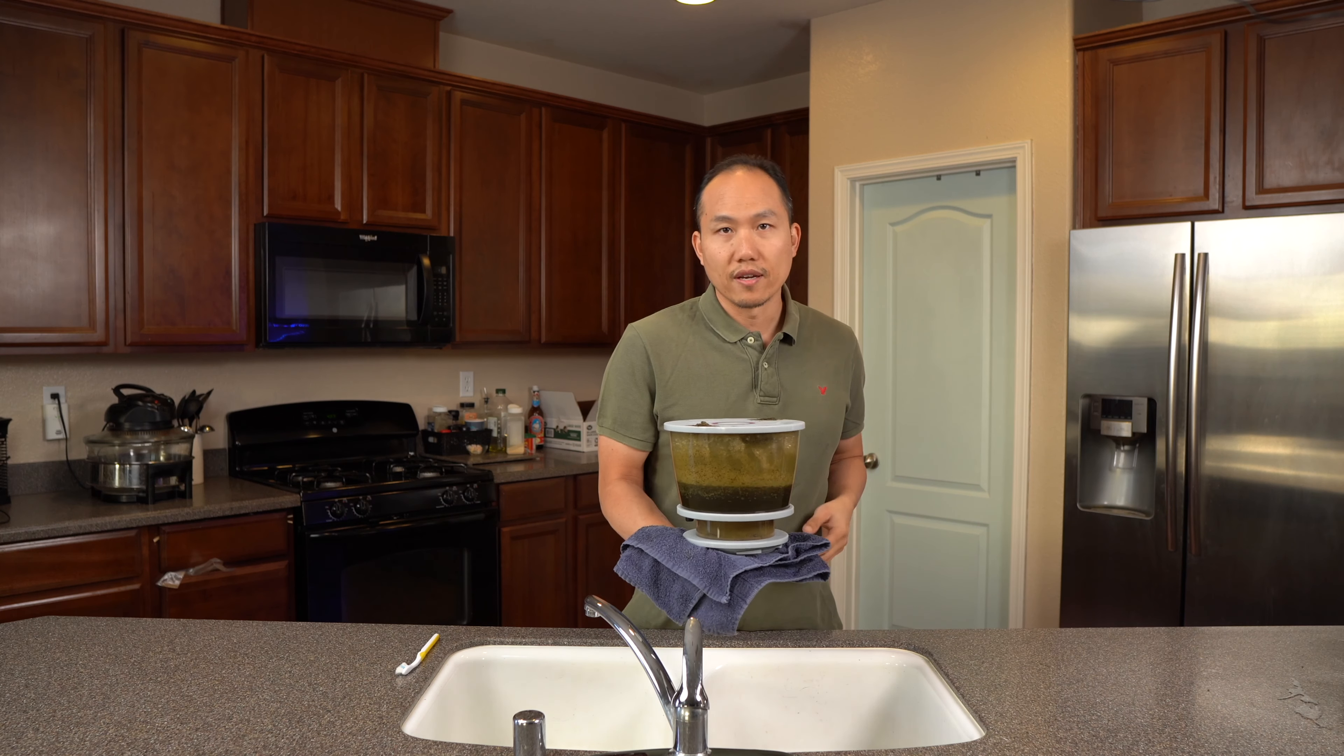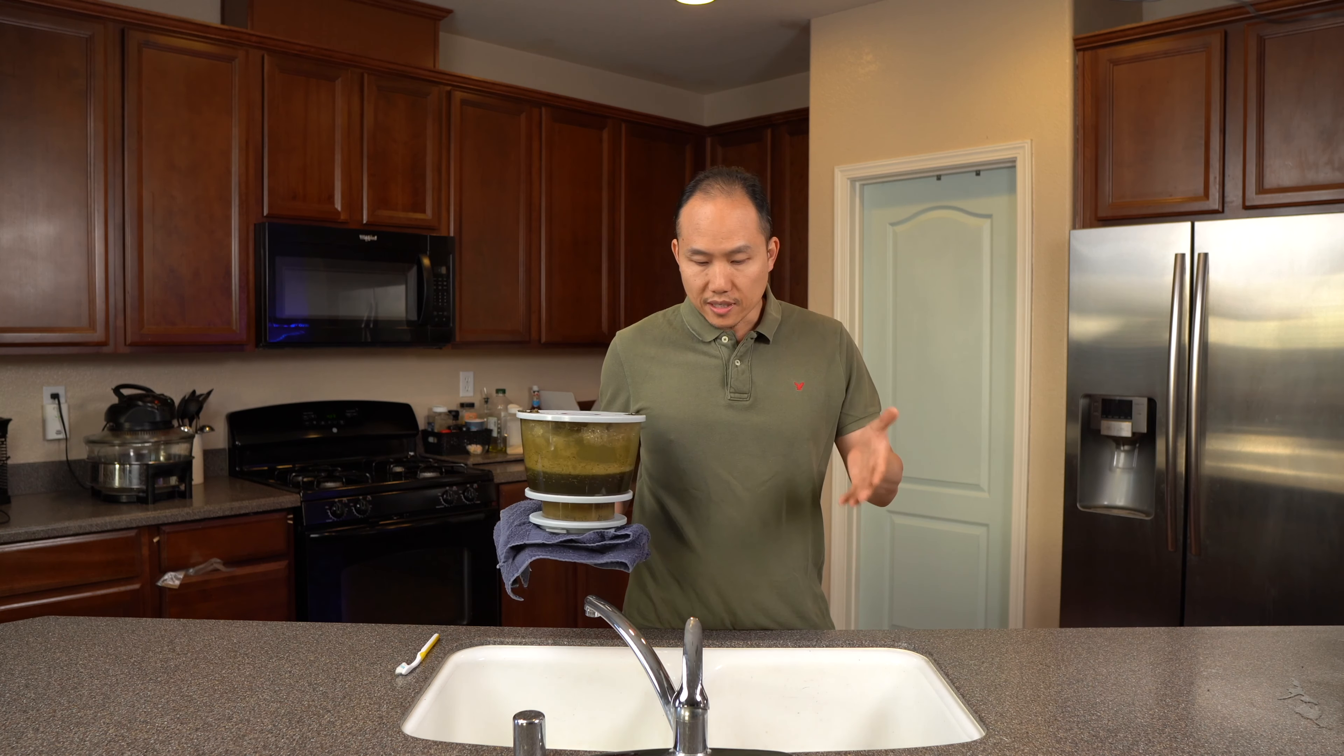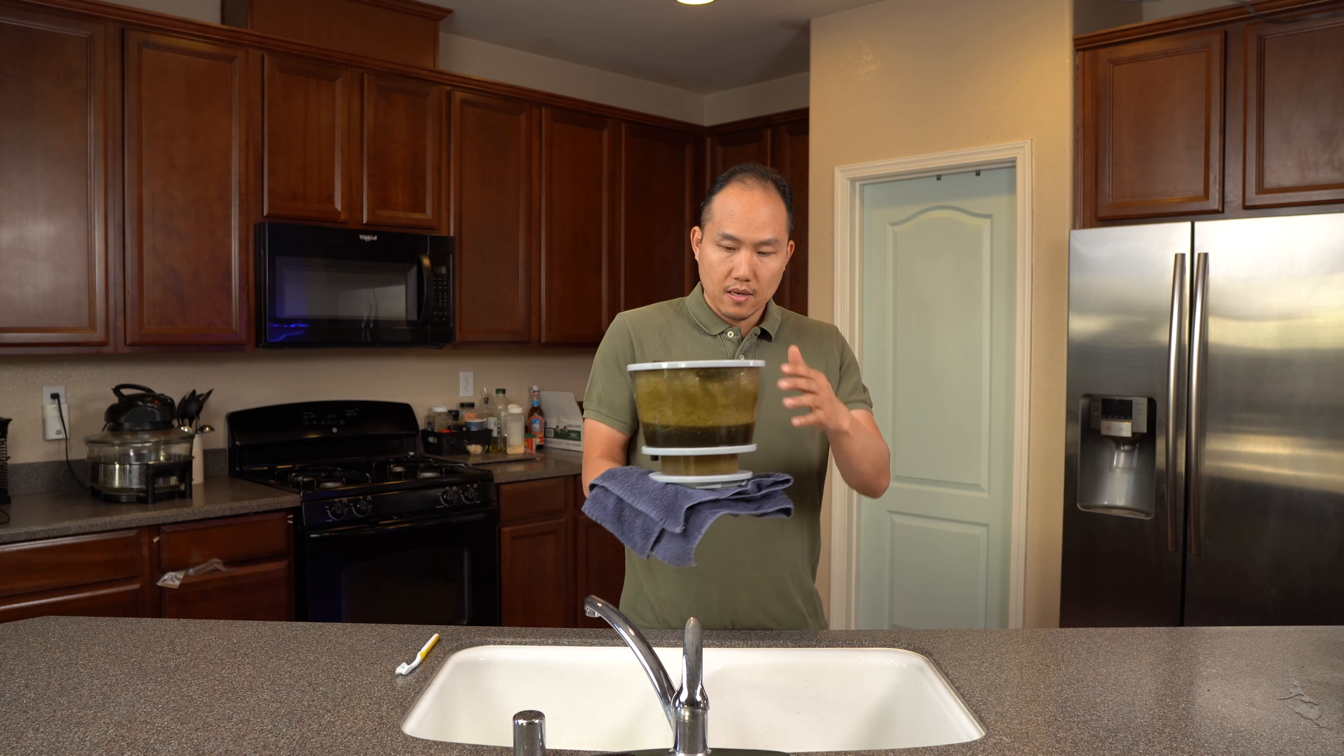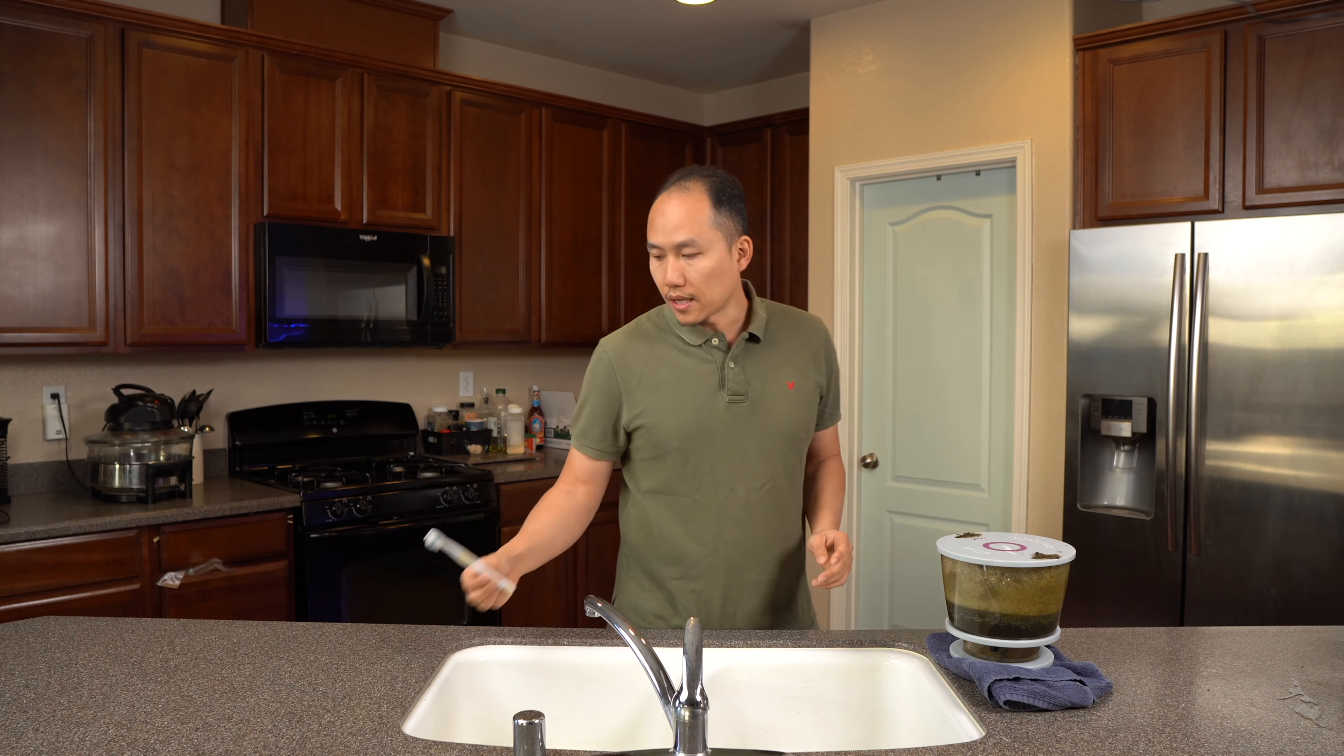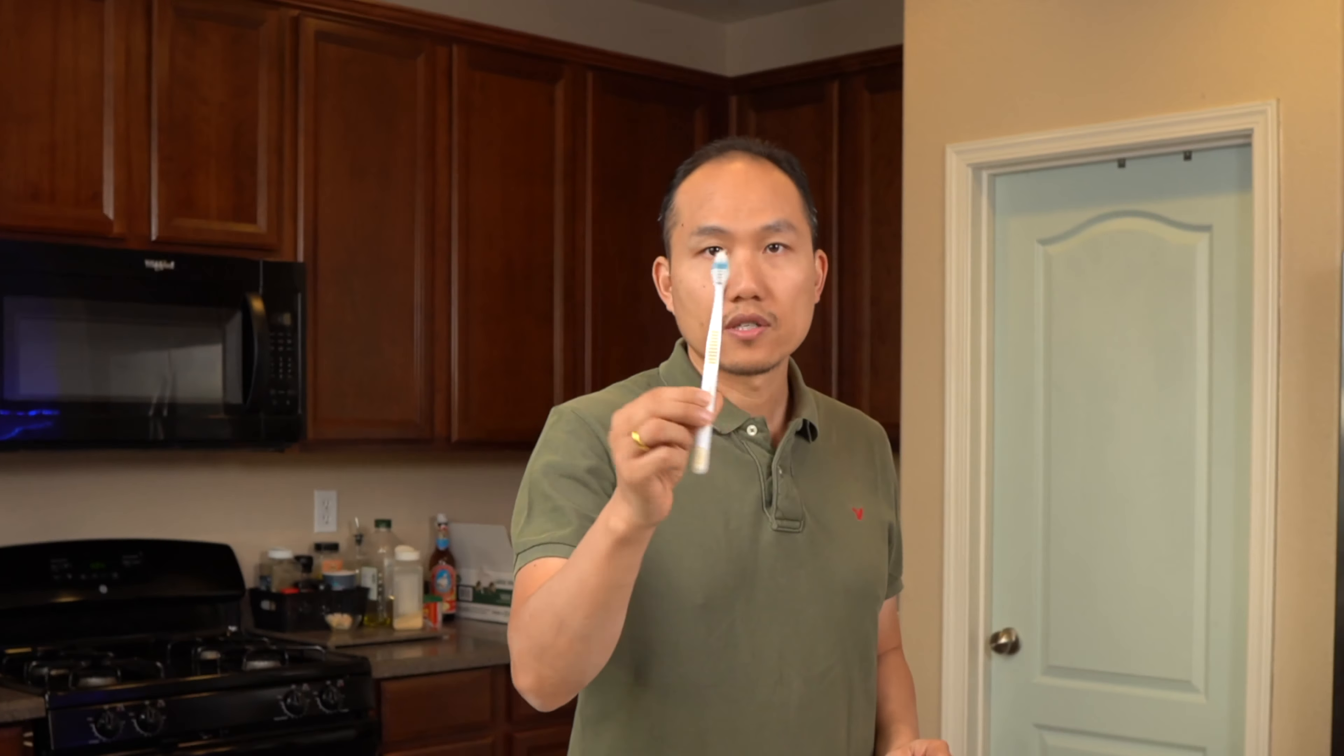Alright so here's the skimmer cup and I typically just clean it in the kitchen sink but I usually use something like an old toothbrush just to clean it up a bit and then I start scrubbing and cleaning the filter cup so let's get to it.